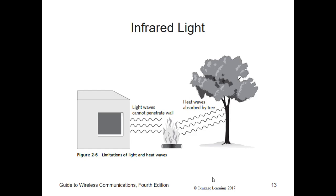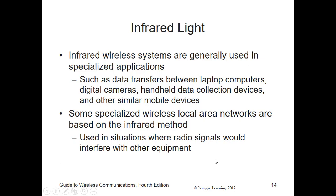In the past, laptop computers were almost always equipped with infrared sensors, which often made it easy to connect to a printer without cables. For the most part, we no longer see those interfaces. Wireless printer connections are now implemented primarily via Wi-Fi or Bluetooth. Some specialized wireless LANs are based on infrared, used in situations where radio signals would interfere with other equipment — such as hospital operating rooms — or when security is a concern, like in a government or military installation.